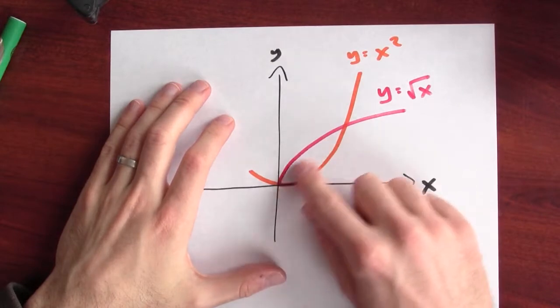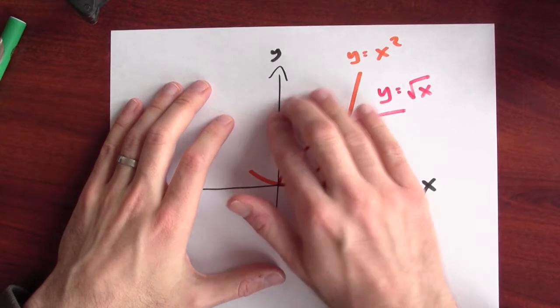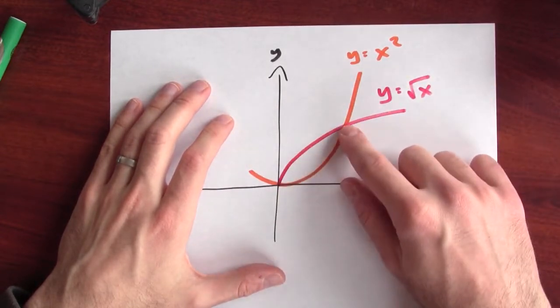Let's figure out the volume of a certain solid of revolution. For example, let's think about this region inside here. The region that's below the graph of y equals the square root of x and above the graph of y equals x squared. Just this little wing-shaped region inside here.